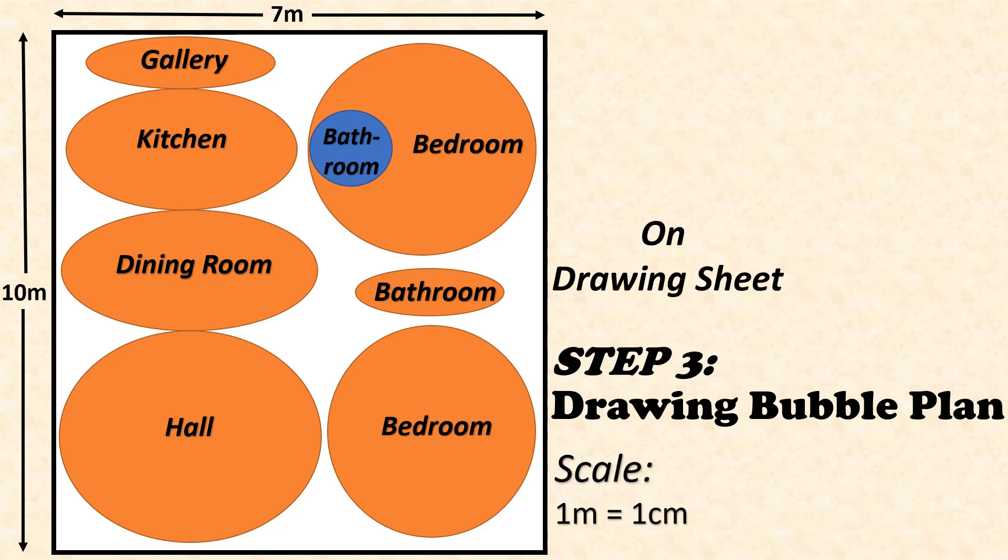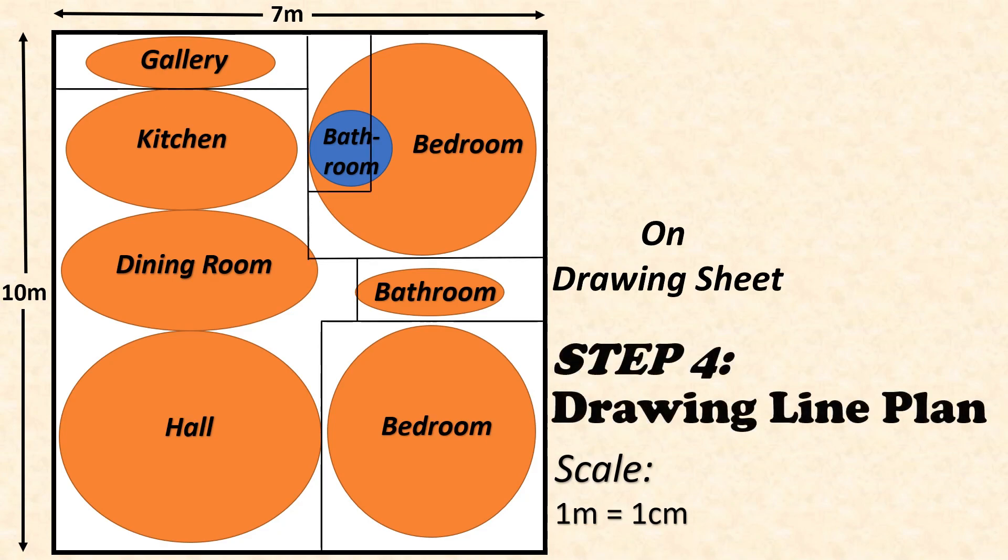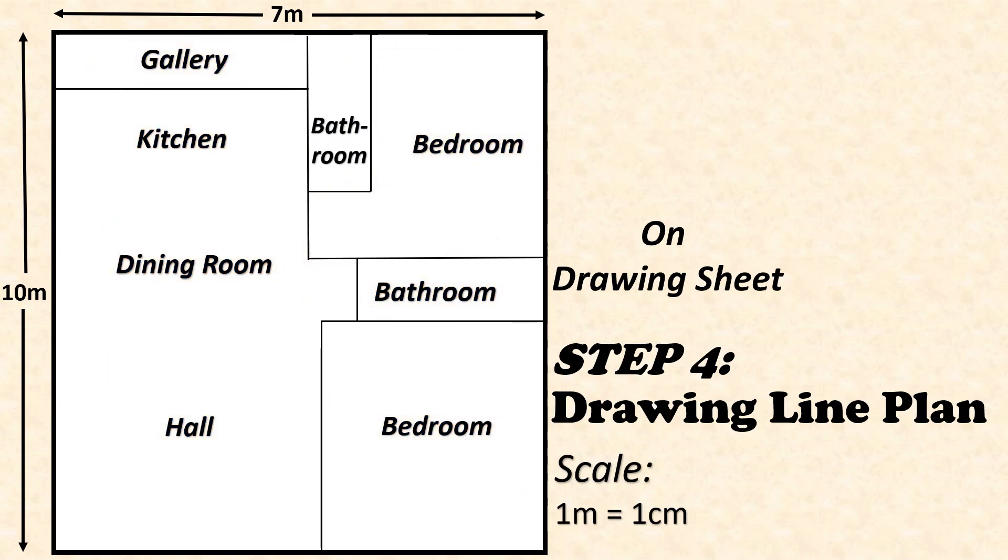Next, our step four is drawing the line plan. Here using a single line we need to make partitions over the bubble plan. This time we need to take care for the required areas for each room. Basically here we are deciding all the sizes of the rooms and making the partitions accordingly using a single line. This is our line plan.